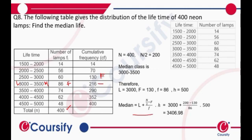We'll get the answer as 3406.98. So the median life of the neon bulb is 3406.98.